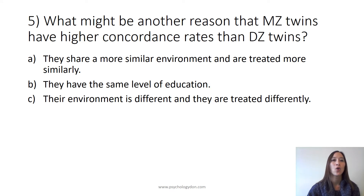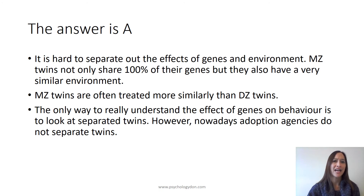Question 5: What might be another reason that MZ twins have higher concordance rates than DZ twins? Is it A, they share a more similar environment and are treated more similarly; B, they have the same level of education; or C, their environment is different and they are treated differently? The answer is A. It's hard to separate out the effects of genes and environment. MZ twins not only share 100% of their genes, but they also have a very similar environment and are often treated more similarly than DZ twins. The only way to really understand the effects of genes on behaviour is to look at separated twins. However, nowadays adoption agencies do not separate twins.